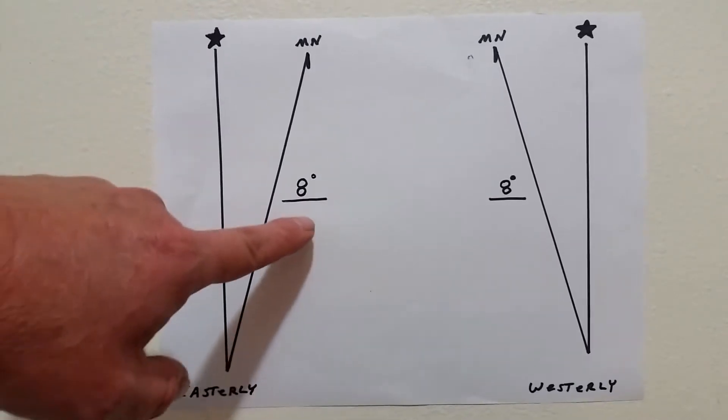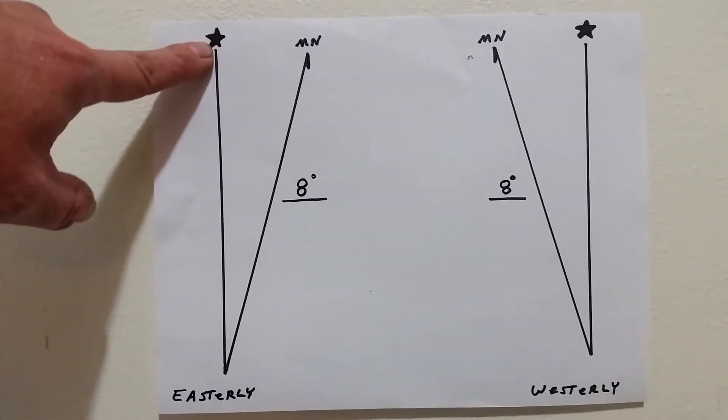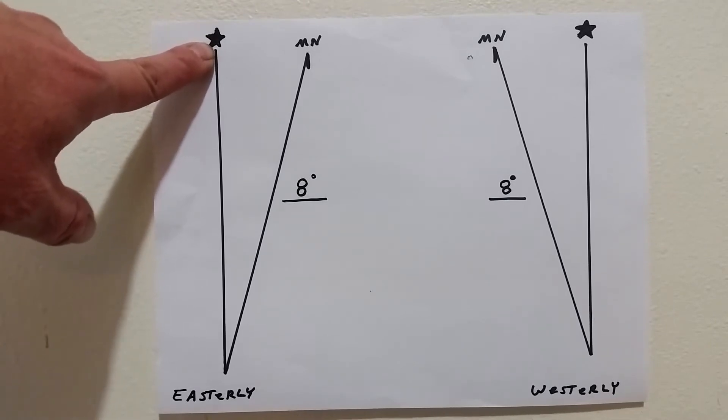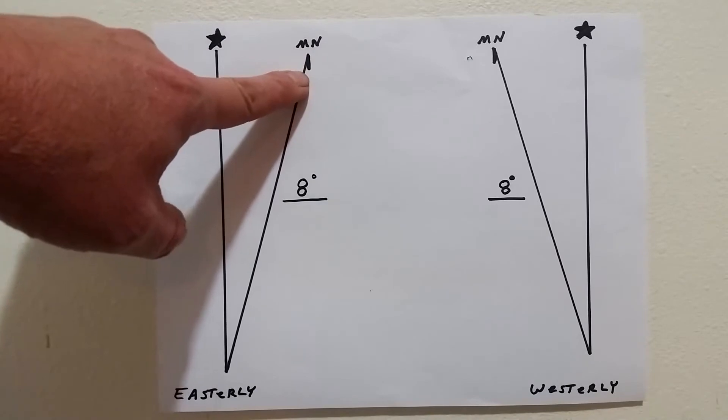So this example will be eight degrees declination. The star will show you true north, or we'll say TN, and MN is magnetic north with a little harpoon on it.